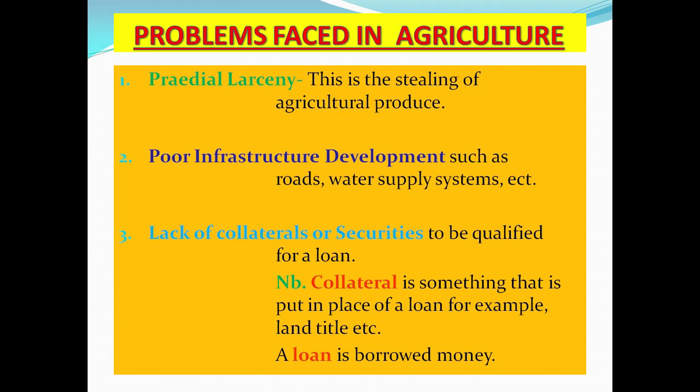The bank secures itself by holding your collateral. For example, if you borrow one million dollars, you sign over a land title of greater value. If you repay the loan, you get the title back; if not, it belongs to the bank. A loan is borrowed money.